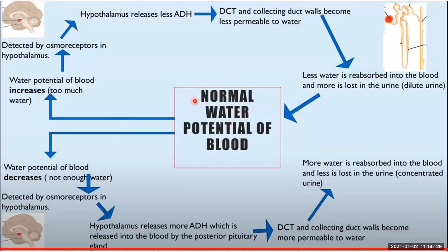To review: if the water potential of the blood increases — too much water — this is detected by osmoreceptors in the hypothalamus, and the hypothalamus releases less antidiuretic hormone, because we do not want to conserve water. With less ADH, the distal convoluted tubule and collecting duct become less permeable to water, reabsorption is reduced, more water is lost in the urine, and a dilute urine is produced.